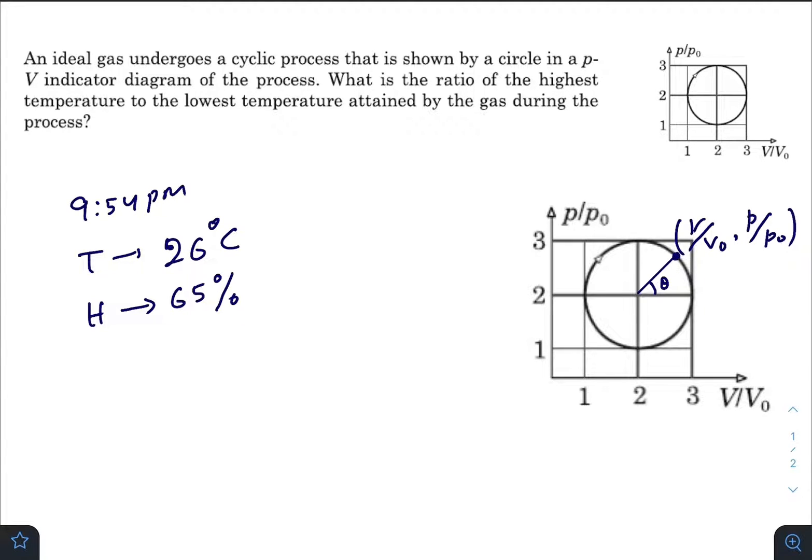Pressure at any point on the process, means on the curve, will be given by p = p₀(2 + sin θ), and V would be given by V = V₀(2 + cos θ).